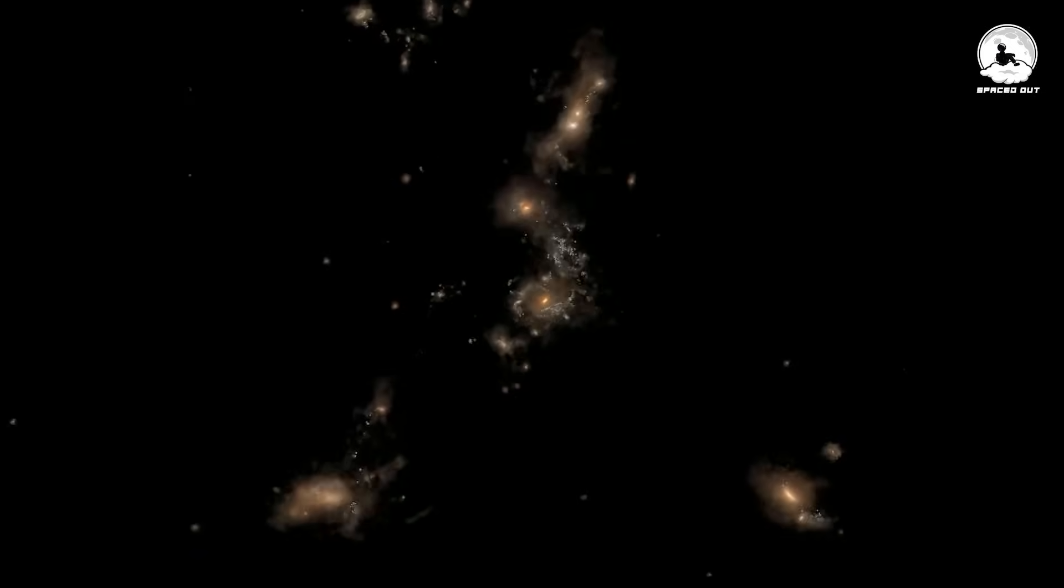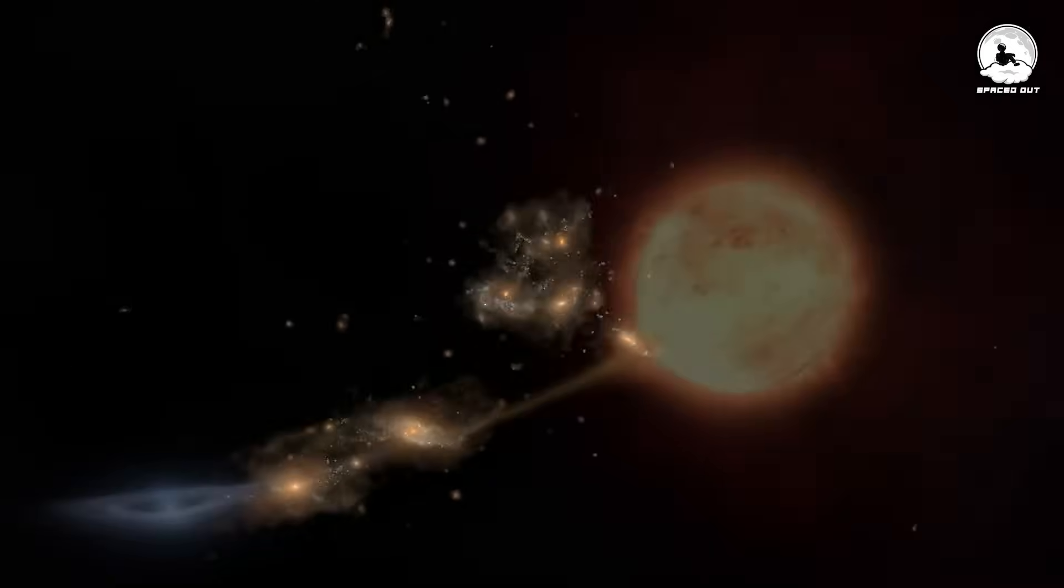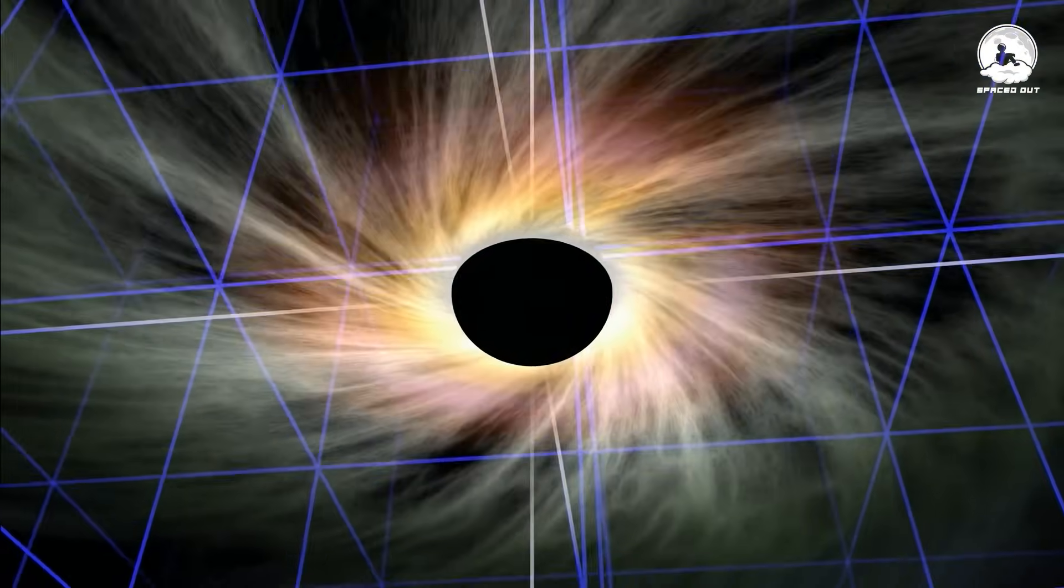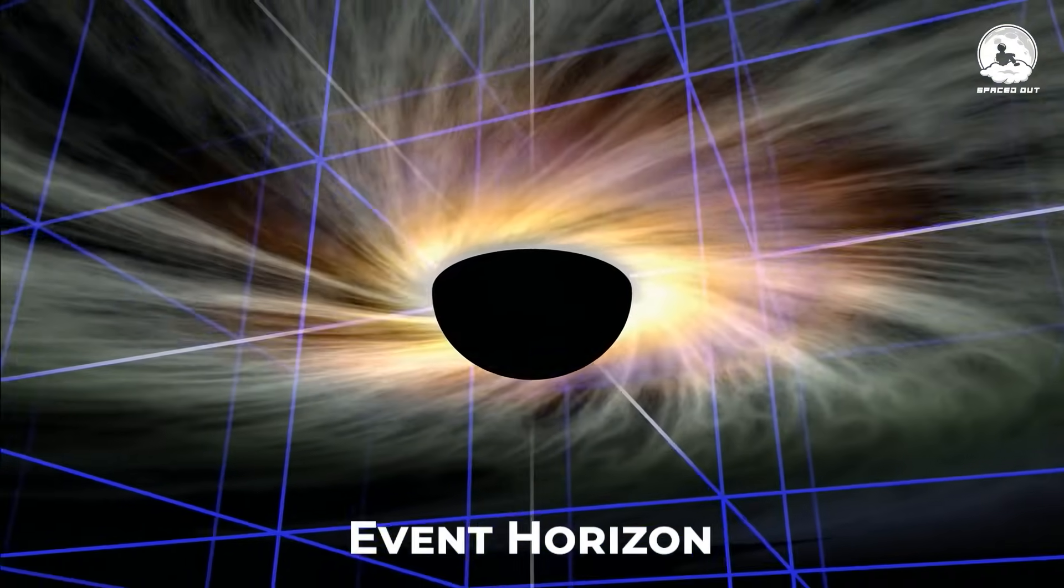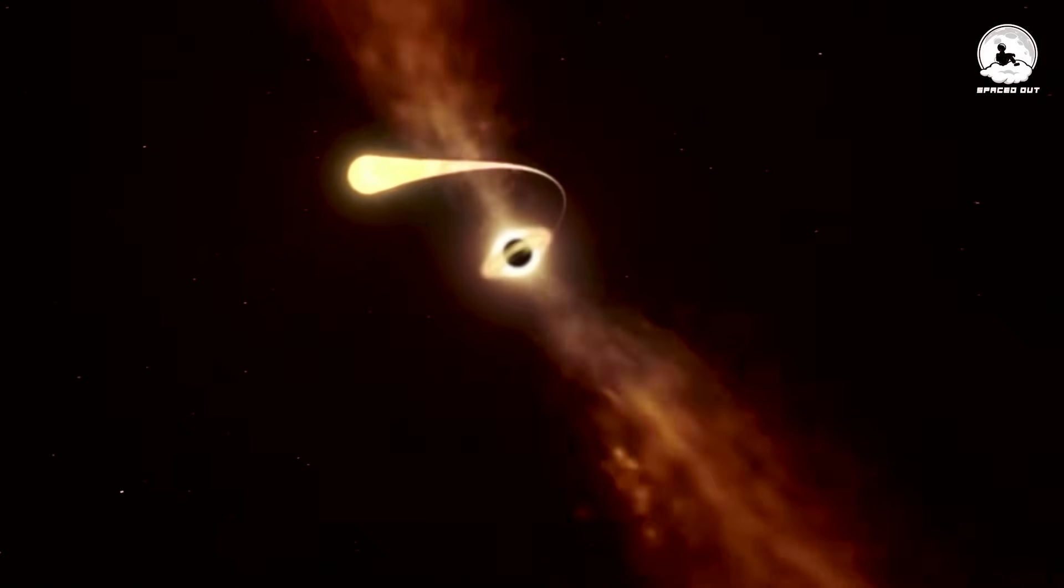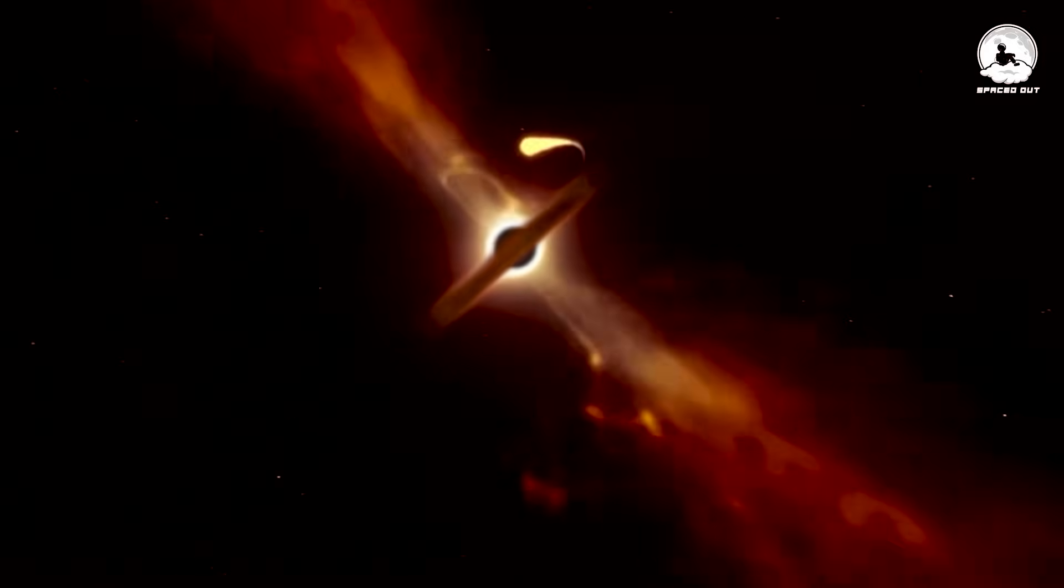When a black hole's gravity bends space intensely, everything around it is drawn towards it, and essentially falls into it. Matter that crosses the event horizon of a black hole is unavoidably pulled in and theoretically cannot escape.